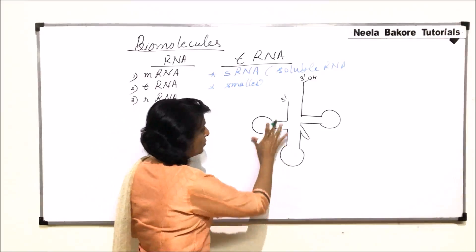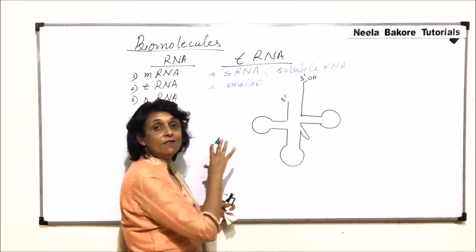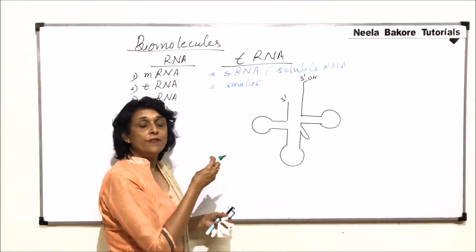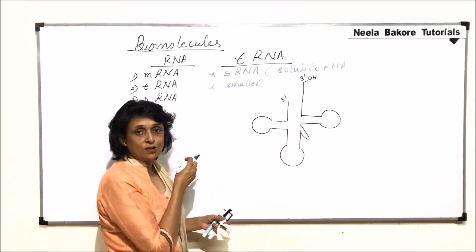The carbon which is the third carbon has hydroxyl functional group free here. Now these three loops which we see they have been given names according to the functions or some special things that they have.